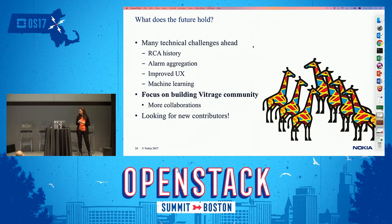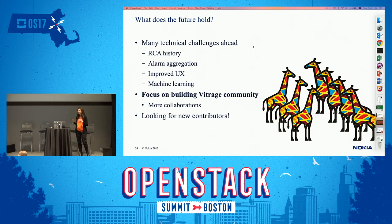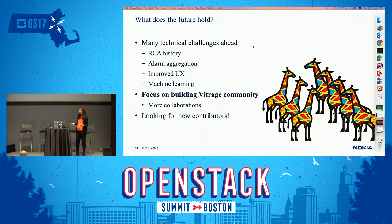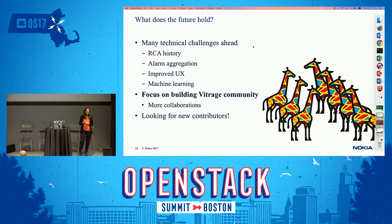We need to improve the UI and usability of Vitrage. The entity graph is a wonderful feature that shows a lot of information, but we need to add filtering on top of it. On the Pike version we started writing a machine learning algorithm — a very first version. We want to automate the process of understanding root causes of alarms. Currently we have human-editable templates that define root cause and alarm deduction; we want the process to do this automatically. This is very promising and interesting, with a lot of future potential. Right after this session we have a forum session in room 102 to discuss these future projects in detail.